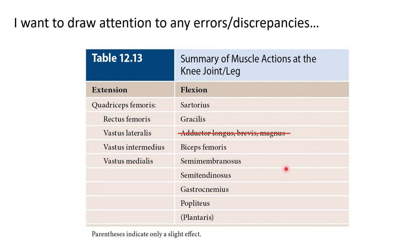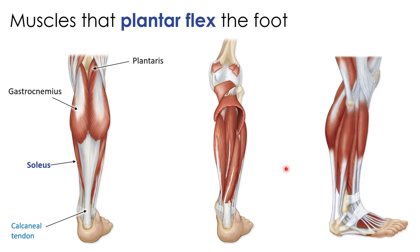Moving to special movements further down the leg: plantar flexion involves pointing the toes and is performed by posterior leg muscles. The gastrocnemius is the large calf muscle with two bellies, and the soleus is the large fish-shaped muscle almost entirely below the gastrocnemius. Both share the same insertion on the calcaneus via the calcaneal (Achilles) tendon. Tearing the Achilles tendon disrupts these large posterior leg muscles.